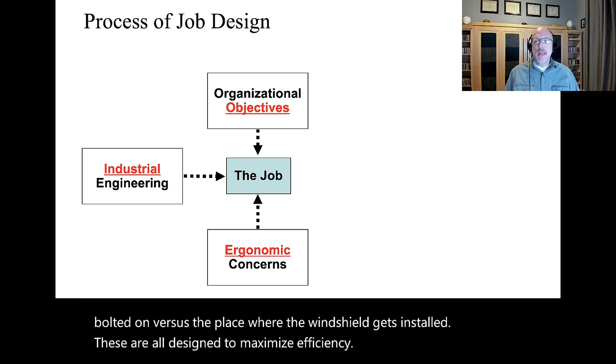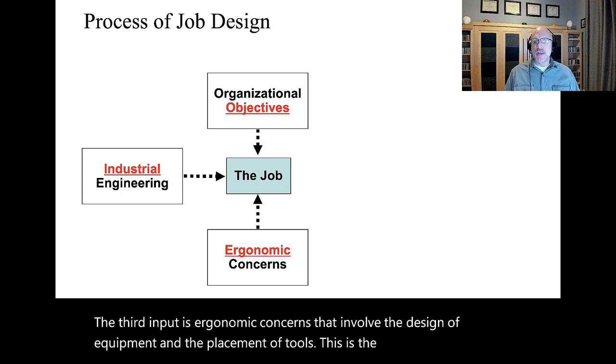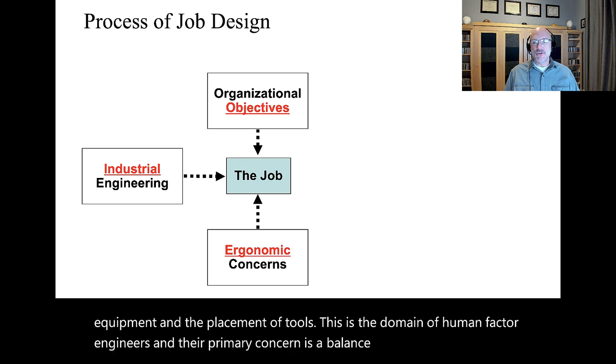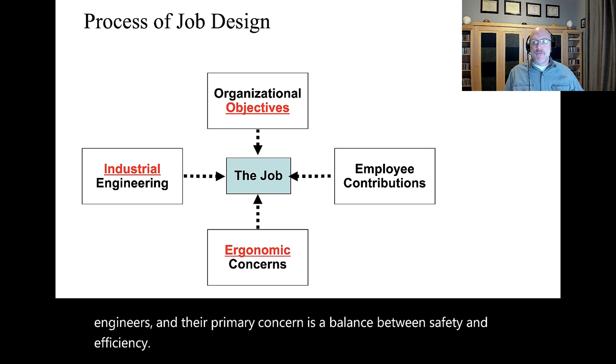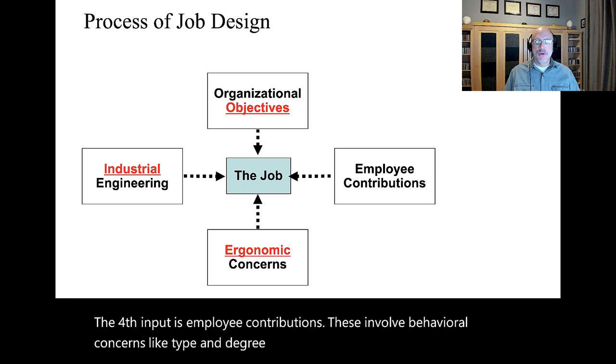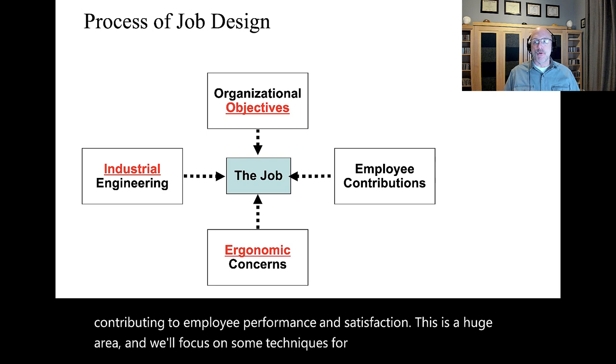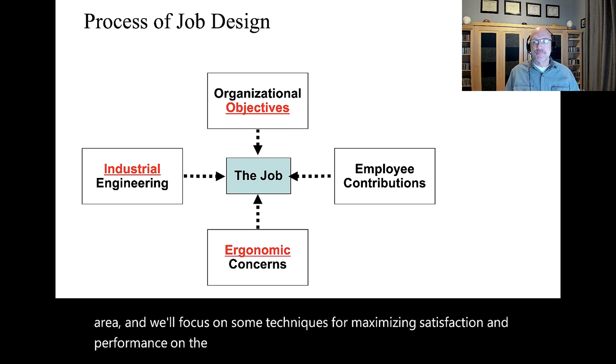The third input is ergonomic concerns that involve the design of equipment and the placement of tools. This is the domain of human factor engineers, and their primary concern is a balance between safety and efficiency. The fourth input is employee contributions. These involve behavioral concerns like type and degree of human interaction and other factors contributing to employee performance and satisfaction. This is a huge area, and we'll focus on some techniques for maximizing satisfaction and performance on the next two slides.